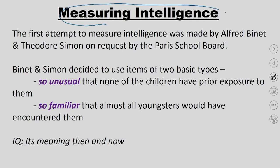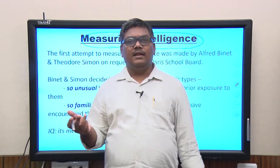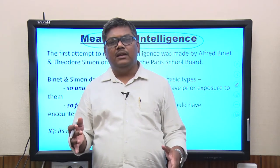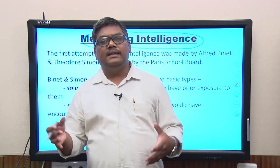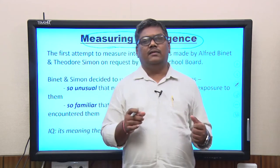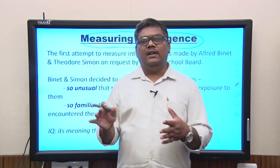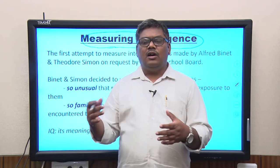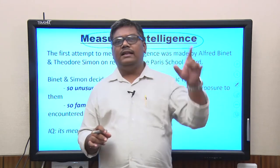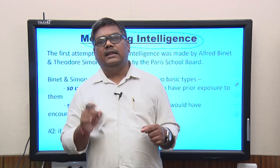Intelligence measurement started with Alfred Binet and Theodore Simon. The Paris school council asked these people to design a test measuring the intelligence or abilities of school-going children. Even before Binet and Simon, there was someone called Galton who defined an intelligence test, but his test never became popular — only his statistical technique did. What Galton did was use Charles Darwin's ideas, saying intelligence comes from inherited abilities and that some intelligent people are born intelligent. He defined 5 or 6 abilities and took measurements from several people at a fair in London, but none of them correlated with each other and his theory fell apart.